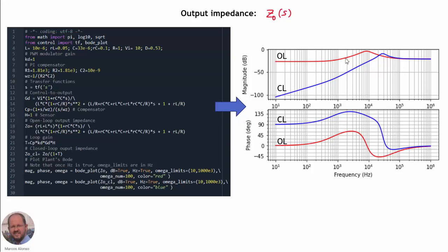Looking at the characteristics obtained using the corresponding WinPython script, we can see in red the open loop output impedance and in blue the magnitude of the output impedance in closed loop. We have a very large frequency range in which we attain a much lower value of the output impedance — approximately up to the bandwidth of the converter — giving us a much better response in terms of output impedance.